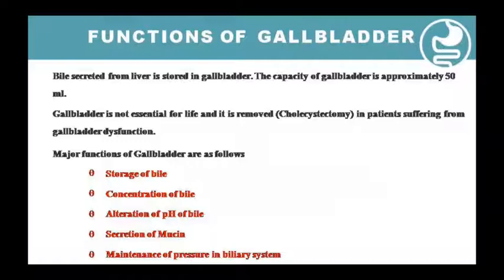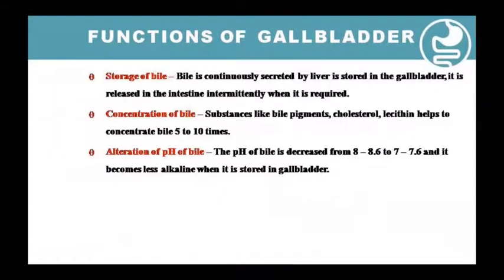Gallbladder storage: bile is continuously secreted by the liver and released into the intestine when needed, especially when fat-rich food is present. Concentration: the gallbladder can concentrate bile five to ten times. The pH is altered from about 8 to around 6 to 7.